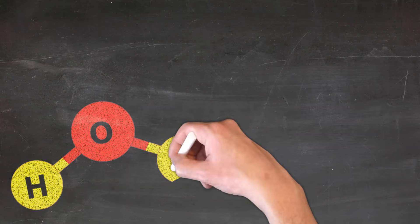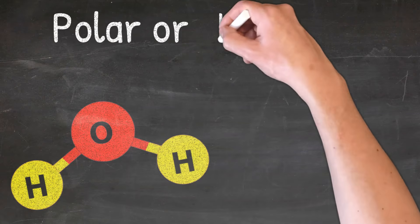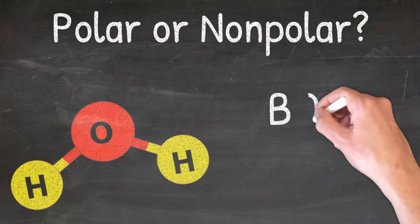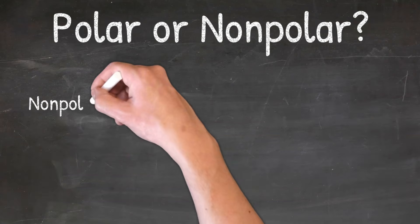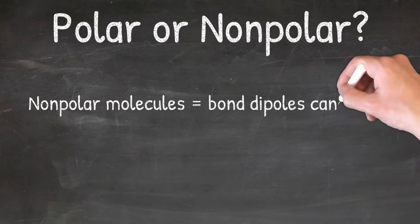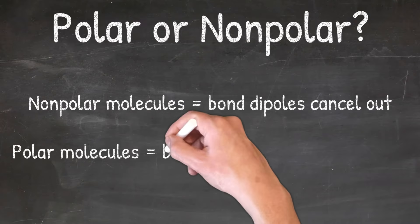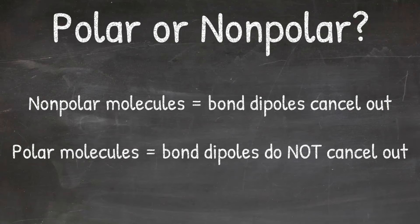Determining whether a molecule is polar or nonpolar comes down to one thing: bond dipoles. In nonpolar molecules, the bond dipoles cancel out, while in polar molecules, the bond dipoles do not cancel out. We do have a video on bond dipoles, so if you need a refresher on them, make sure to check that out. Now let's look at some examples.